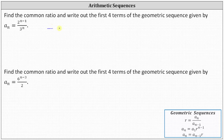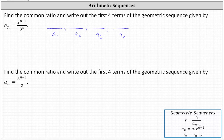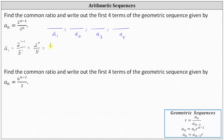The first four terms of the geometric sequence will be a sub one, a sub two, a sub three, and a sub four. Let's first find a sub one. When n equals one, a sub one equals two to the power of one minus one, divided by three to the first. Simplifying, we have two to the power of zero divided by three to the first. Two to the zero is one, and three to the first is three, so a sub one equals one-third.